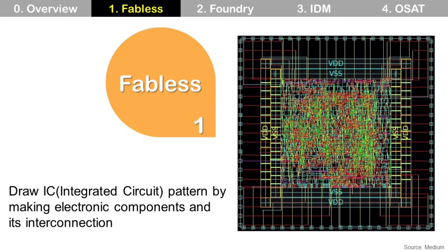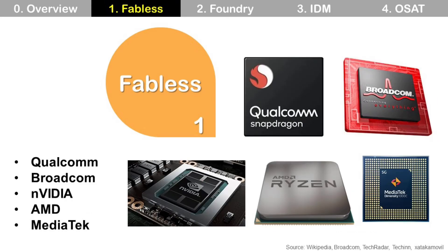Fabless companies draw the IC pattern by making electronic components and their interconnections. Qualcomm, Broadcom, NVIDIA, AMD, and MediaTek are the top fabless companies.